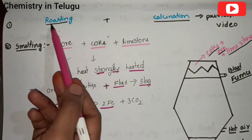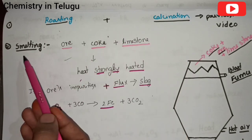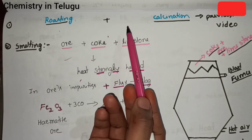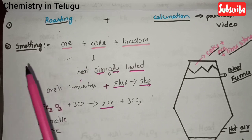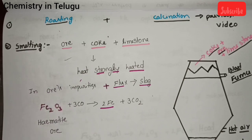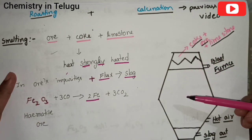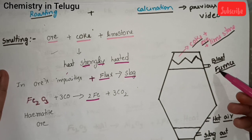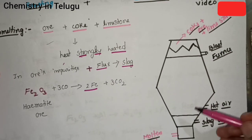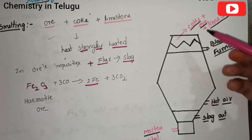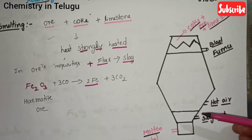If you choose the roasting process, you can search it on YouTube. The main inputs are coke, ore, and limestone. We mix these and allow them into the blast furnace — called a kolimi-type construction — using hot air and high temperature.